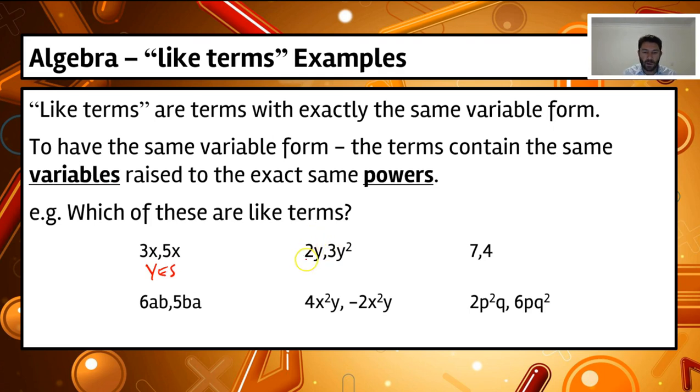We've got in the second one here, we've got 2y and 3y squared. Well, we've got two y's, but what do we notice here? It's raised to the power of 2. So this is actually, they're not like terms. Just here we've got 7 and 4. Are they like terms? Yes, they are, because they're just the constant terms.